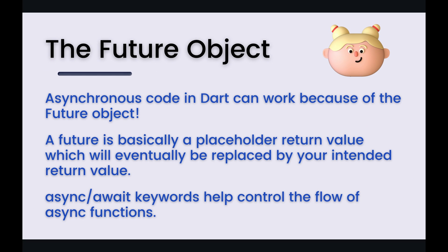All of this asynchronous code can work because of the future object. The future object is basically a placeholder that a function will return. It's basically saying, this is just a placeholder for now, I'm going to go work on that function and continue executing. And then when I have some return value or data to return, I'm going to replace that future object with the actual data that was requested. That is a very special thing — the future object — and that's what makes asynchronous code possible.